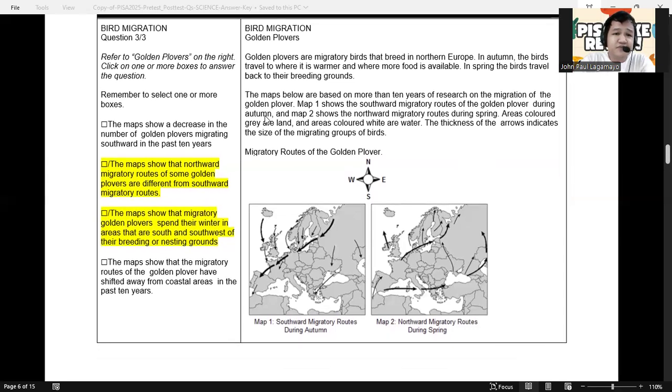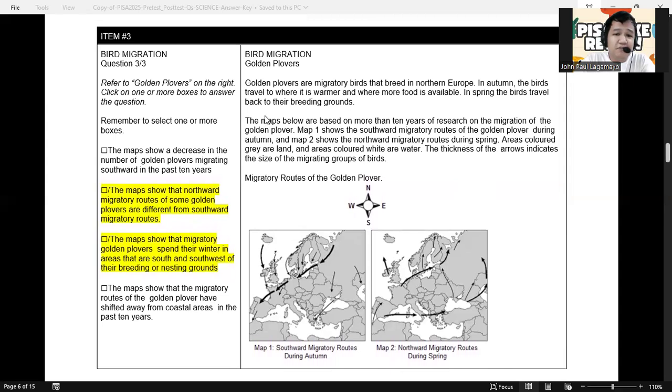So we have here, we are tasked here to analyze the two maps presented. And we are to select one or more answers relating to the map. So remember to select one or more boxes. Let's try to identify the best possible answers here. Let's try to look at option number 1. The maps show a decrease in the number of golden plovers migrating southwards in the past 10 years. Do you think this is accurate? They have mentioned about for the past 10 years. But the map shows no evidence of year here. So there is no history. But definitely, option number 1 here is incorrect.